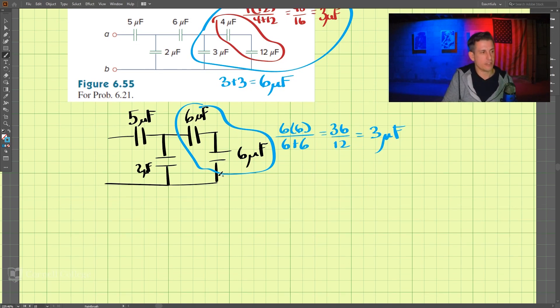Combining those together. And then that is in parallel with this 2 microfarad capacitor. So, that is 2 plus our 3, that is 5 microfarads.